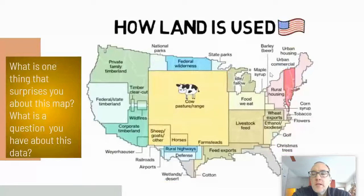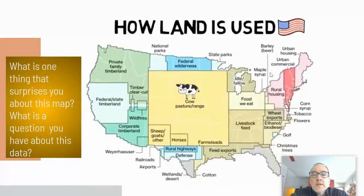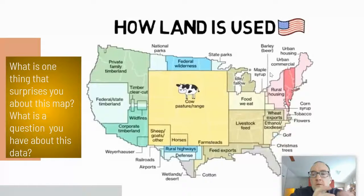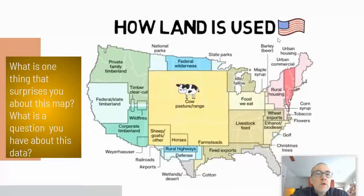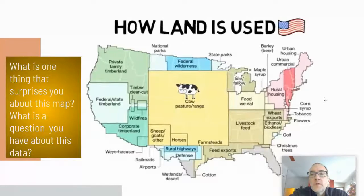So first I'd like you to look at this map. This map represents use of land throughout the United States, showing different categories and the relative area of each. What I'd like you to do is tell me: what is one thing that surprises you about this map, and what is a question you have about this data? Pick which land use surprised you and give me a question about it.